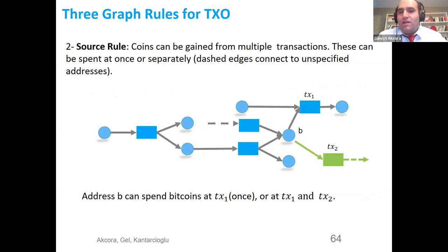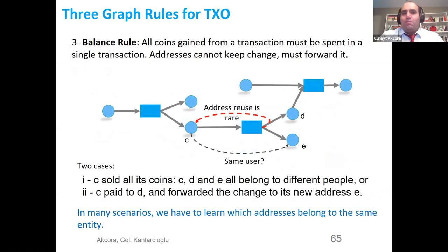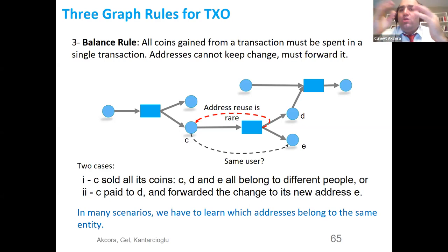The second rule says coins can be gained from multiple transactions, and these multiple outputs can be merged and spent at once or separately. However, you cannot spend one output in two different transactions — outputs are indivisible units. The third rule is the balance rule: all coins gained from a transaction must be spent in a single transaction. Addresses cannot keep change. If you have 10 Bitcoins and want to spend 9, you must direct that 1 Bitcoin to a new address you created.